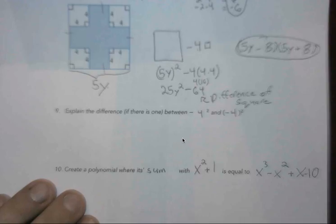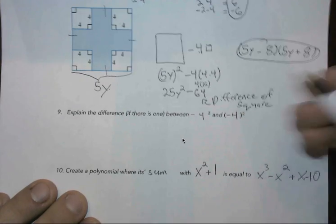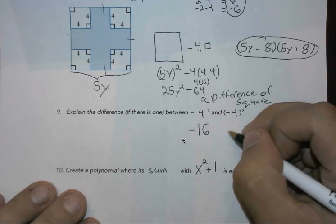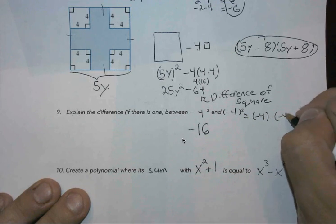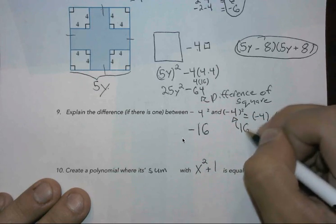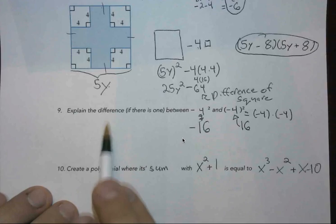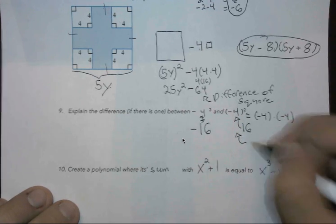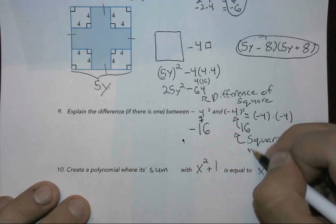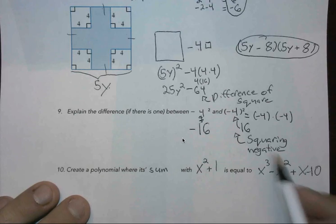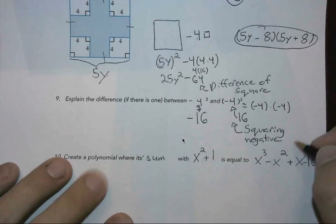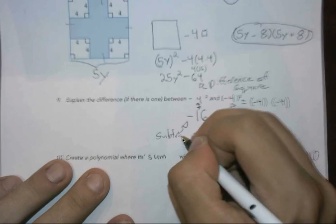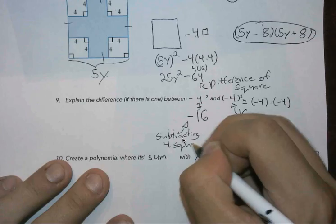The difference between subtracting 4 squared and the quantity negative 4 being squared. This is subtracting 16, pretty much, whereas this is being rewritten as negative 4 times negative 4. Notice, two different ways. 16, this is negative. So as far as explaining the difference, there is one, because this answer is positive, this is negative. We could say that with this option here, we're squaring negative 4. For here, we're squaring negative 4. And then over here, we're just subtracting 4 squared. So you could say that's the difference.